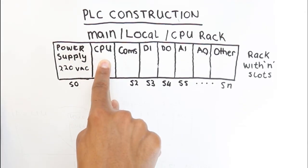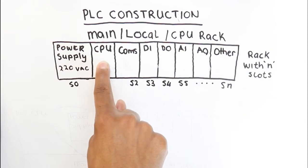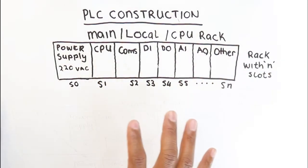Then the second card that you'd get is the CPU, which is the central processing unit. So when you program your PLC, the program will sit here in your CPU, and the CPU then controls everything that is going on on the PLC.